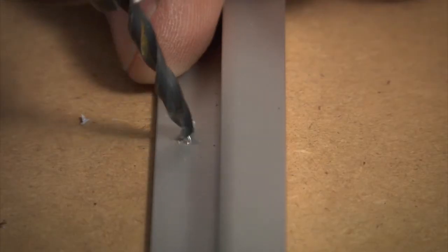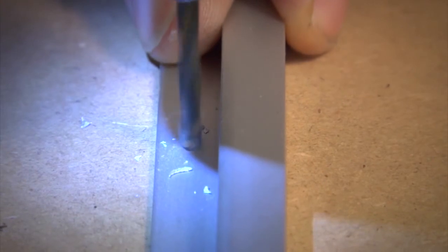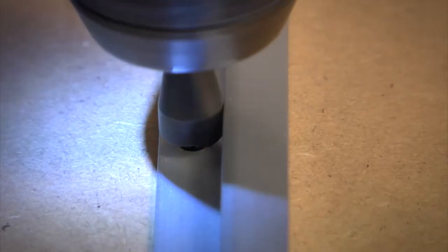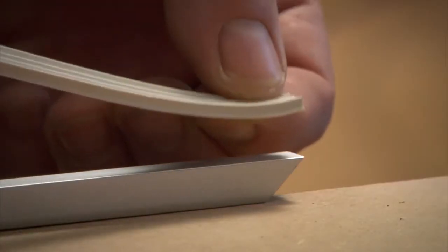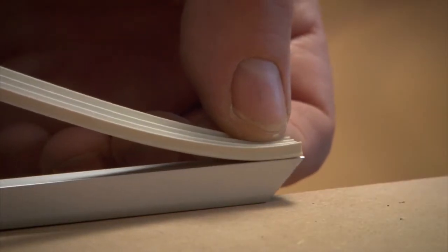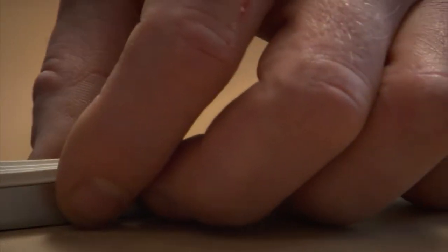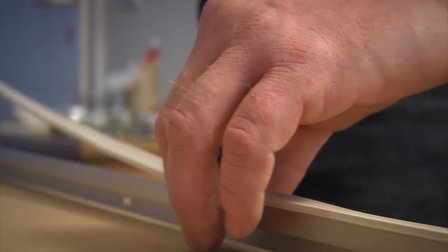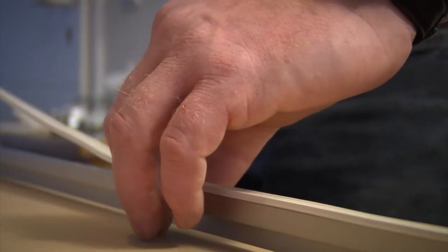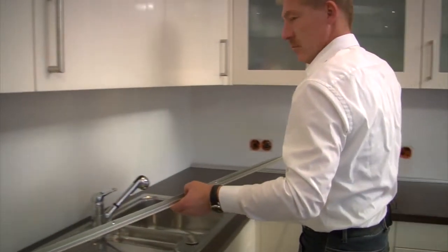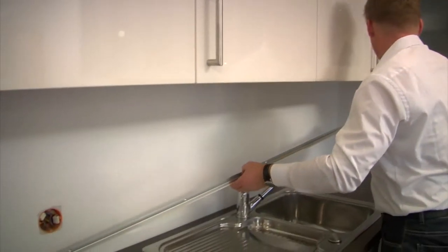After drilling, the profiles must be countersunk so that the screws won't protrude later on. Next a window seal is placed between the profile and the countertop. The seal is attached to the lower profile to stop the water getting underneath it. The seal can be purchased in every hardware store. You can use silicone as well. Now the frame for the acrylite high-gloss sheets can be attached.